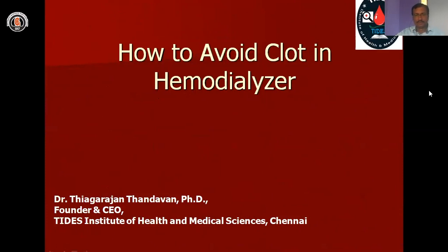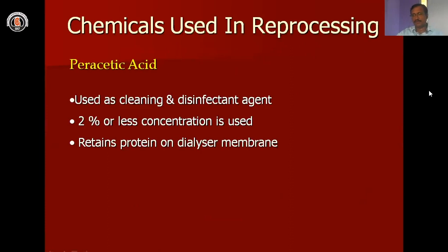Today we are going to look into the concept of how to avoid clot in dialysis, especially during the hemodialysis procedure, which is the most important factor where we are losing all the clearance due to this clot. We will see the basic importance when we are looking into the dialysis, and how we are going to do the reprocessing, especially with a chemical called thoracic acid. The thoracic acid is the most important thing for cleaning of the dialysis.